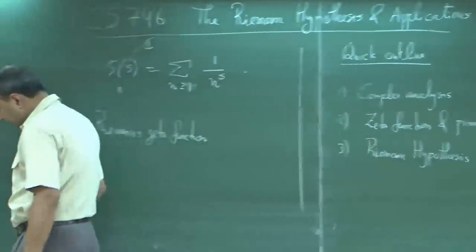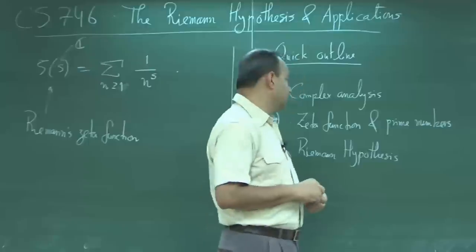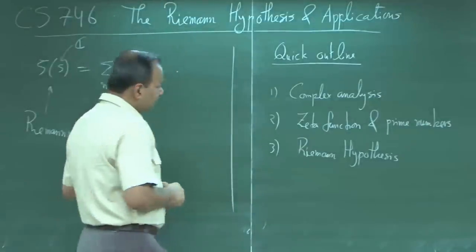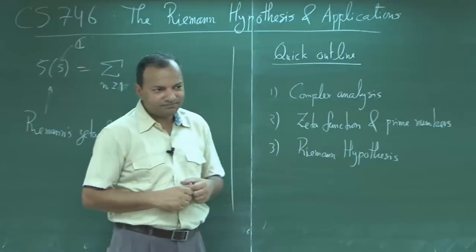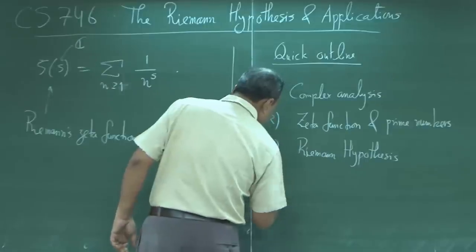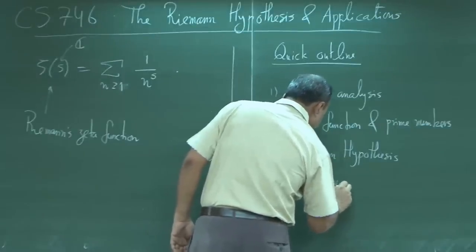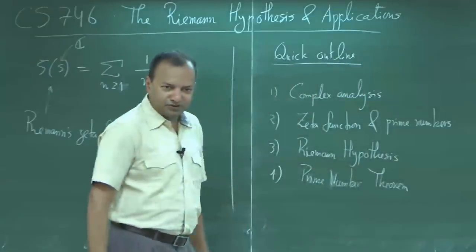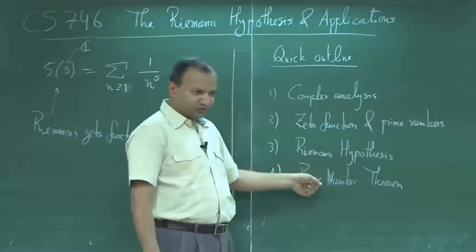Riemann also made a conjecture about the nature of the zeta function when he did this study, and that conjecture is still unproven after more than 150 years. A number of mathematicians have tried to prove it but failed, and it is considered to be the greatest unsolved problem in mathematics. There also happens to be a one million dollar prize for anybody who proves this hypothesis. We will prove the prime number theorem, which essentially follows from a weaker version of the Riemann hypothesis that one can prove.